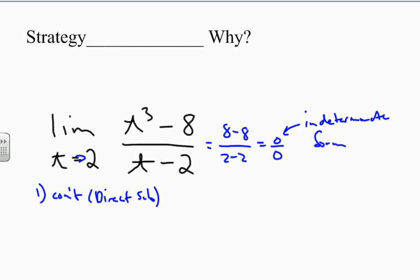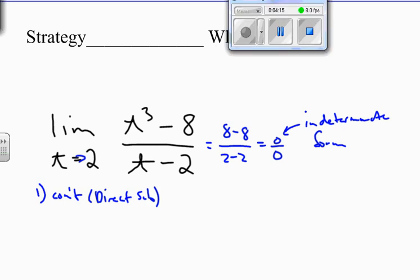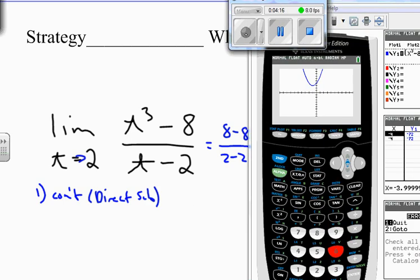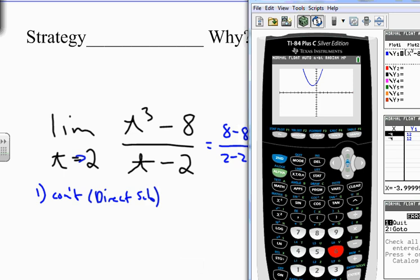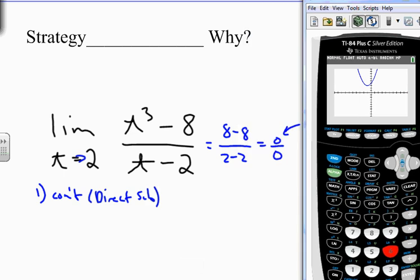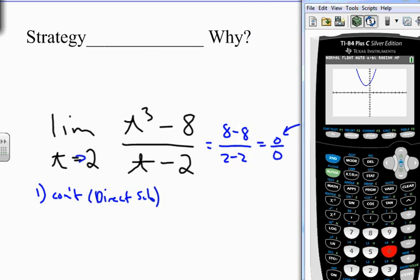If you graph this, what you'll see is that there appears to be a value at 2. But if you actually plug in your calculator, you will not get a value. That value will not exist. And actually, I'm going to demonstrate that in one second. So I'm going to pause this and get my calculator out. I just popped up my calculator. And just to show you what this is, this graph right here is a parabola.